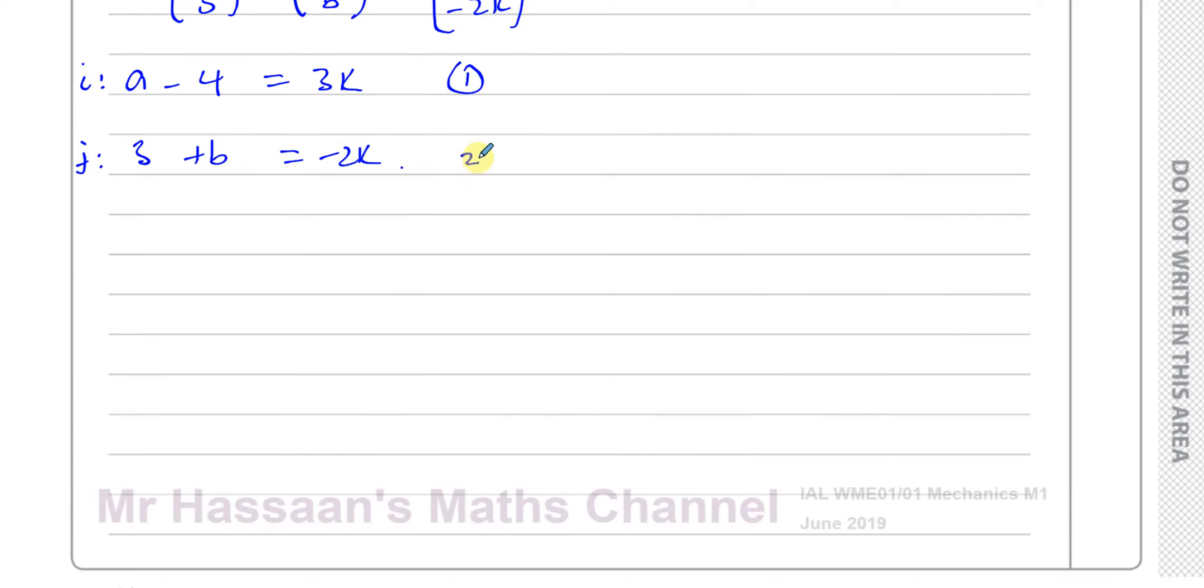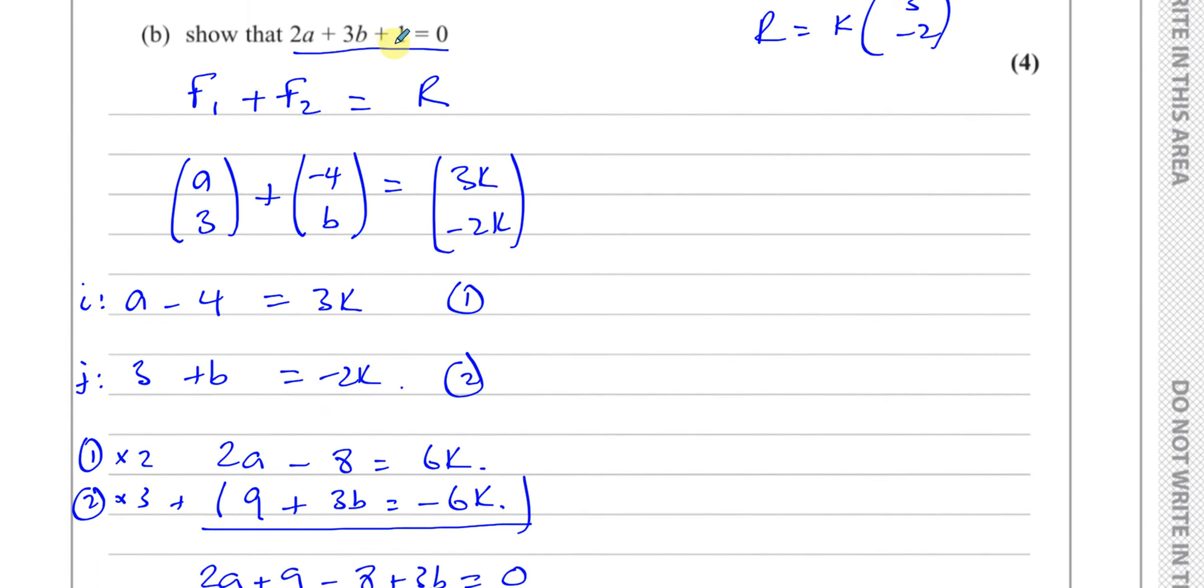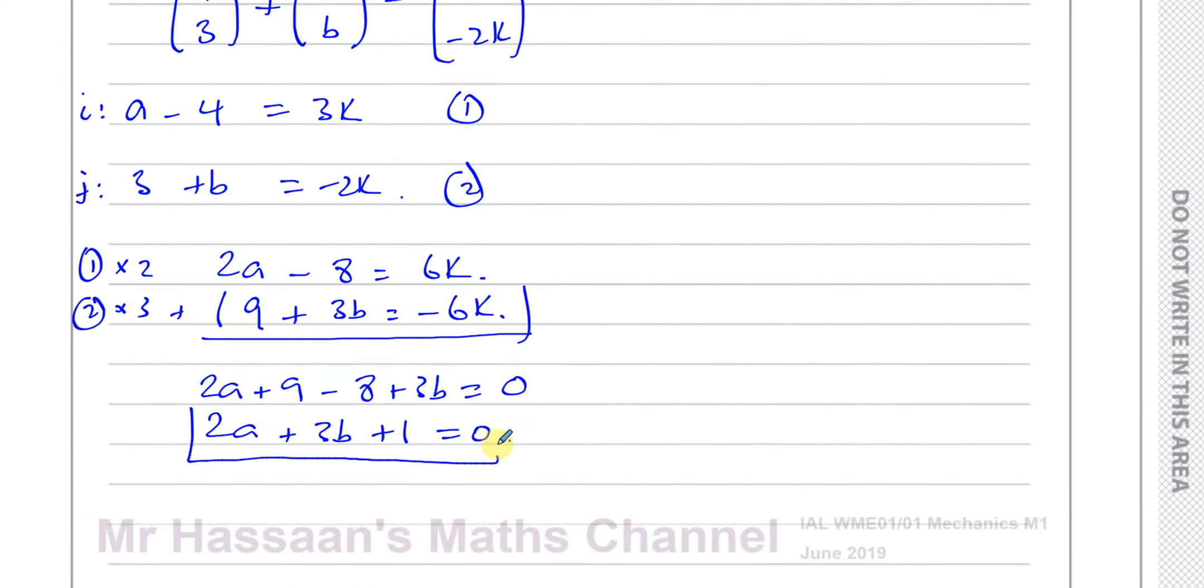If I take equation 1 and 2, if I multiply equation 1 by 2 and equation 2 by 3, that will become 6K and that will become negative 6K, and I'll be able to eliminate them. So let's multiply all of equation 1 by 2. That will give me 2a minus 8 equals 6K. And all of this by 3, that gives me 9 plus 3b is equal to negative 6K. Now to eliminate the Ks, I need to add these two equations together. If I add them, I have 2a plus 9 minus 8 plus 3b is equal to 6K plus minus 6K is 0, which is what we wanted. So now we can see we've got 2a plus 3b, 9 minus 8 plus 1 equals 0, which is exactly what we had to show: 2a plus 3b plus 1 equals 0, as required.